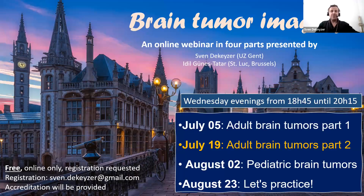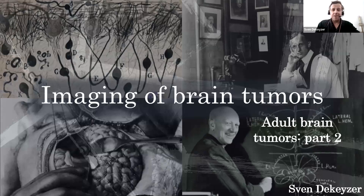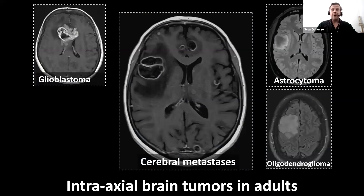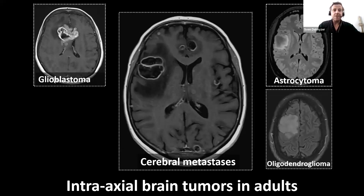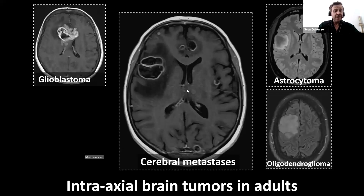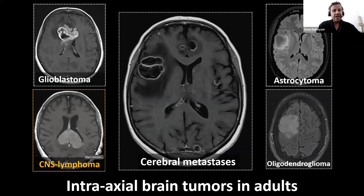So we can jump right into it. What did we see last time? The last session was dedicated entirely to intra-axial brain tumors in adult patients. We discussed cerebral metastasis, glioblastoma, astrocytoma, oligodendroglioma — but one is missing. One we didn't discuss yet, and that is central nervous system lymphoma.